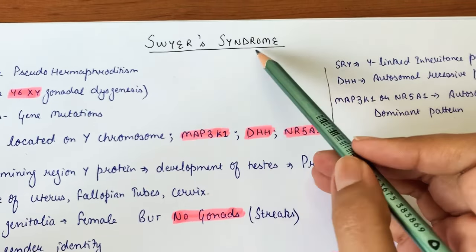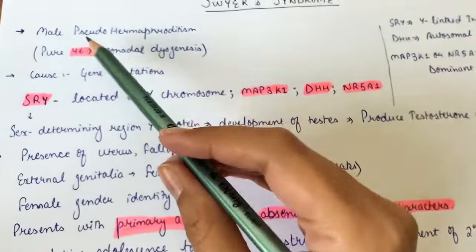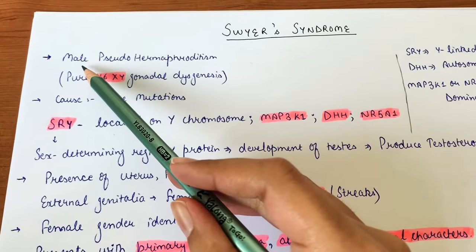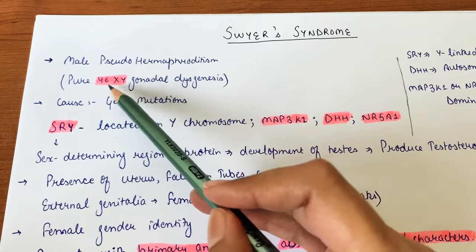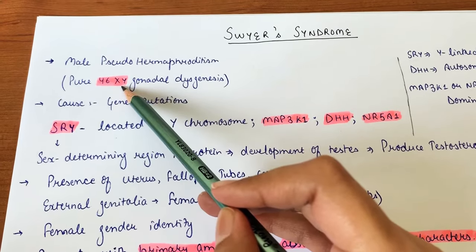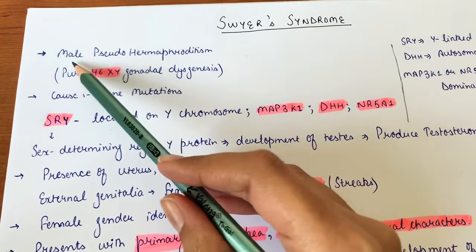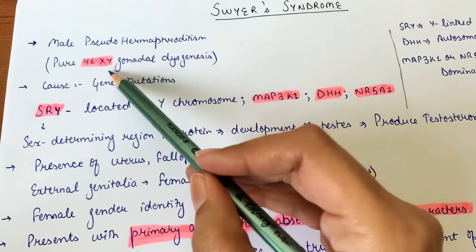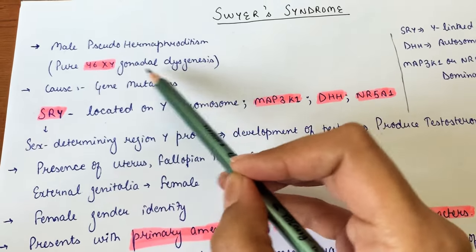Sawyer syndrome, also called Sawyer-James syndrome, involves male pseudohermaphroditism. In these patients, the genotype is male (46 XY) but the phenotype is female. That's why they are called male pseudohermaphrodites. It can also be called pure XY gonadal dysgenesis.